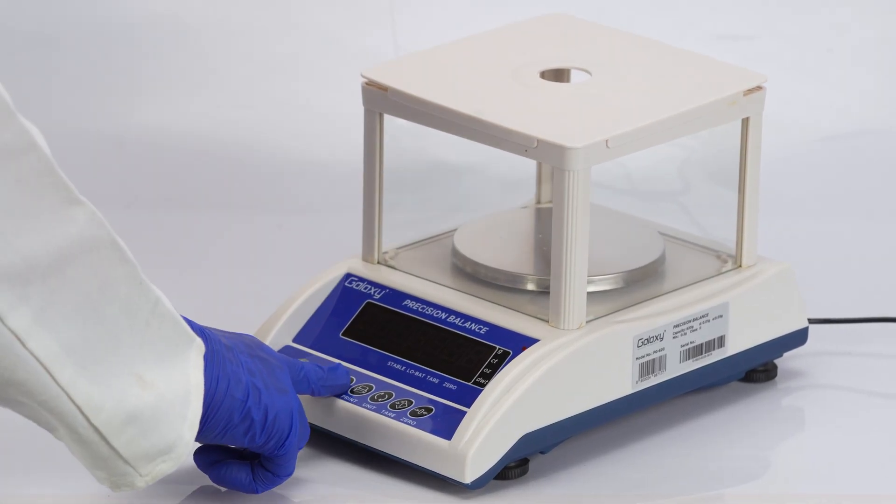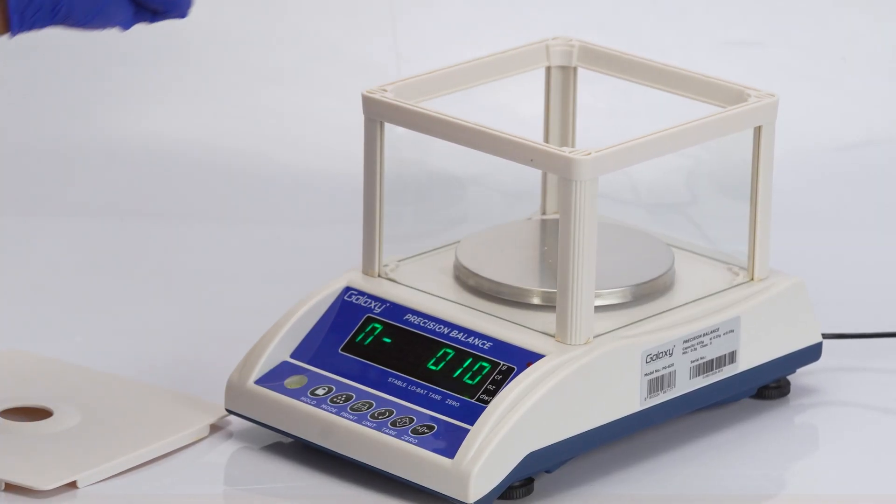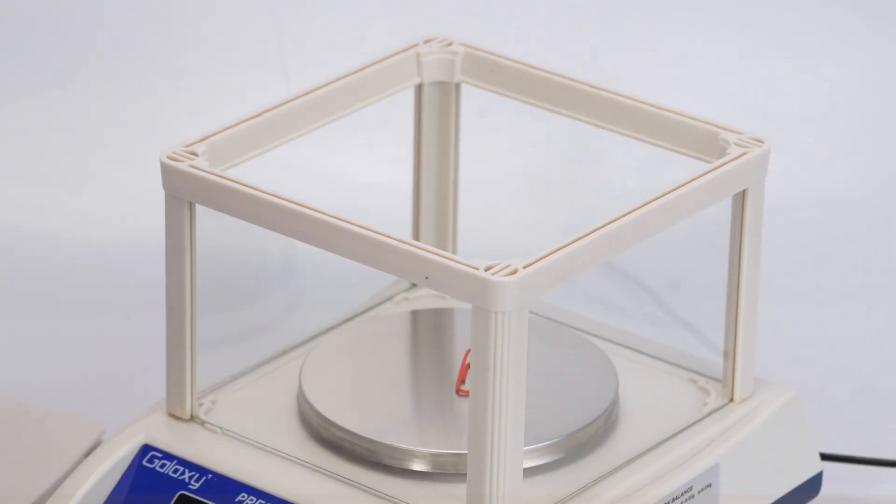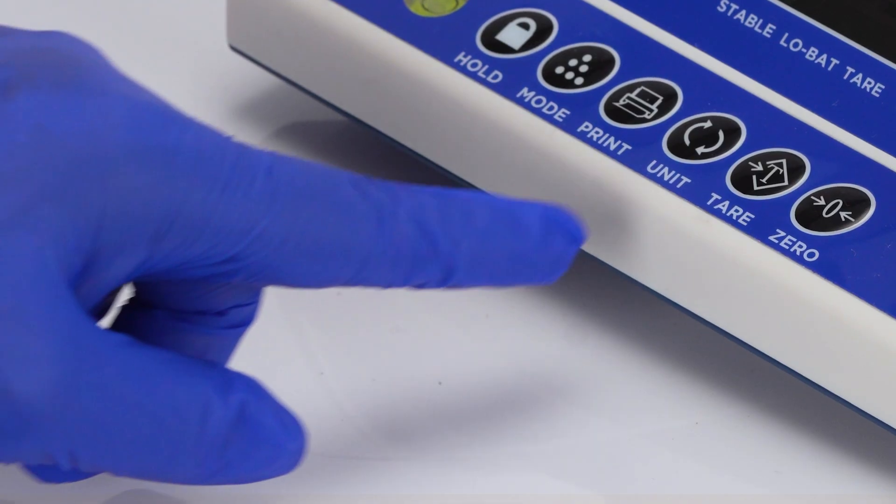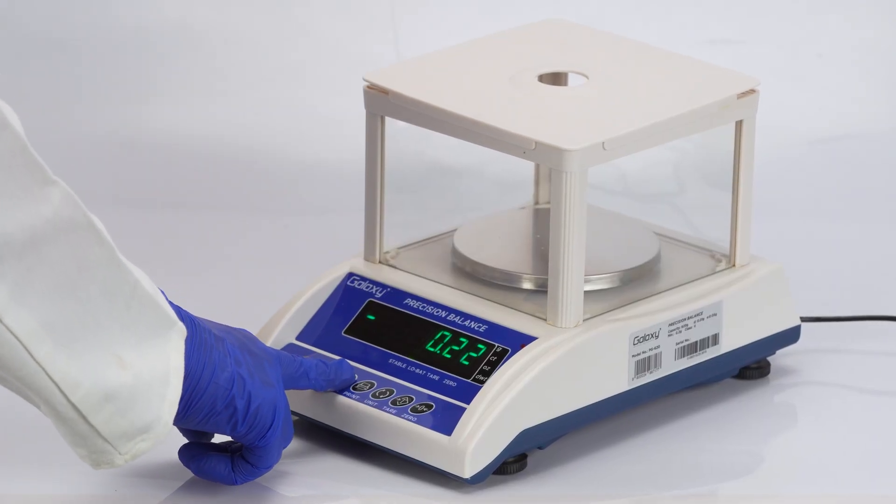To use the piece counting function, press PCS in weighing mode and place the sample to be measured on the pan. Press unit to input the quantity, adjust using tare or zero, then press mode to save.